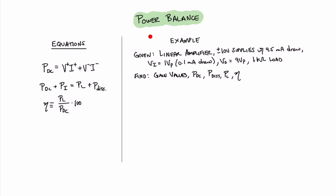Now let's take a look at an example of the power balance of an amplifier. We have a linear amplifier with plus or minus 10 volt supplies drawing 9.5 milliamps each, a voltage input of 1 volt peak drawing 0.1 milliamps, and a voltage output of 9 volts peak going to a 1 kilohm load. We're asked to find the voltage, current, and power gains, the DC power, dissipated power, load power, and circuit efficiency. Starting with voltage gain: A sub V equals 9 volts over 1 volt, giving 9 V/V, or 19.1 decibels.